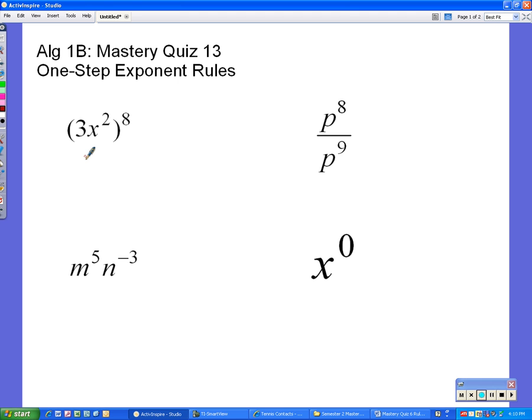So that being said, the first problem here, 3x squared is in parentheses and it has an exponent of 8 on the outside of the parentheses. The first rule we're going to use is that rule that says we need to share this outside exponent with everything inside, because there's multiplication happening on the inside. So we are going to share the 8 with the 3 and with the x squared. So what that looks like is 3 to the 8th times x squared now has 2 to the 8th on it.